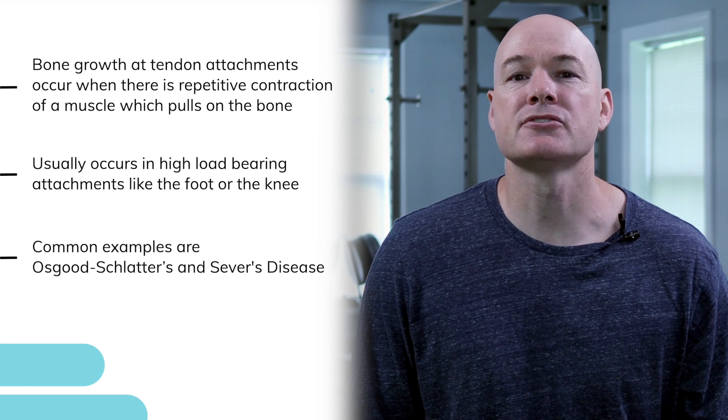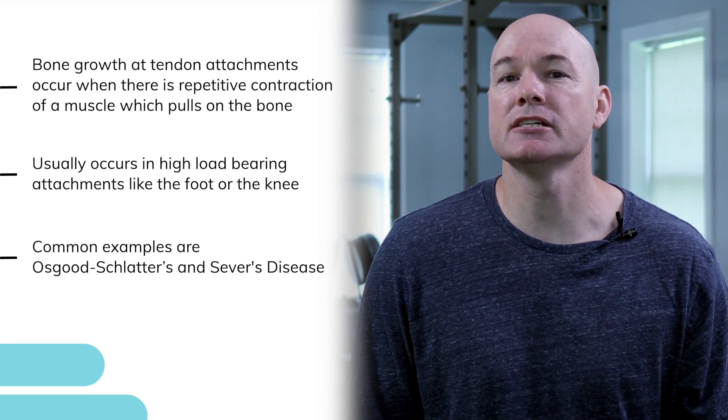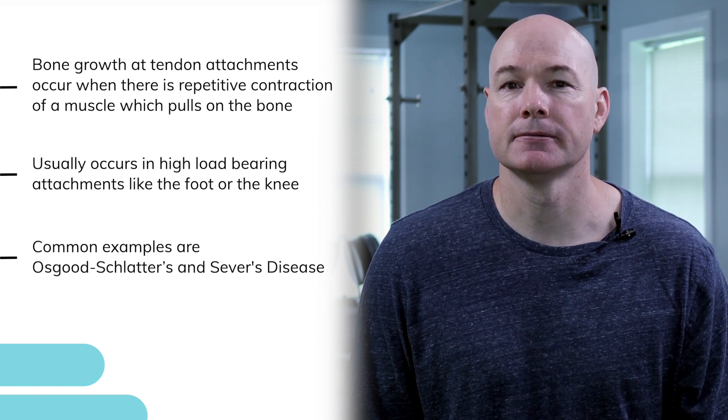Common examples are Osgood-Schlatter's and Sever's disease. It seems likely that the plantar pain at the heel is just as, if not more likely to be due to the plantar muscles repeatedly pulling on the bone. Heel spurs are shown to have a poor relation to plantar fasciitis and actually occur deep to, or below, the plantar fascia.